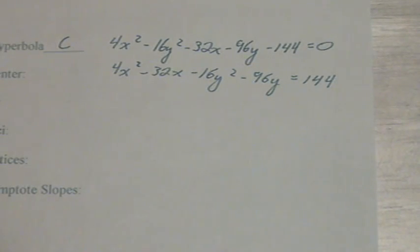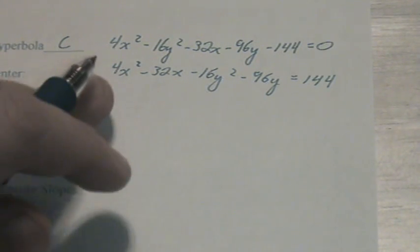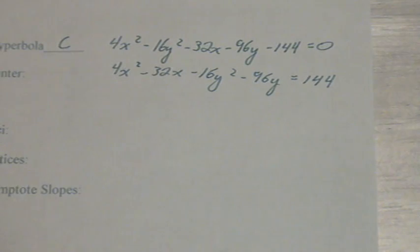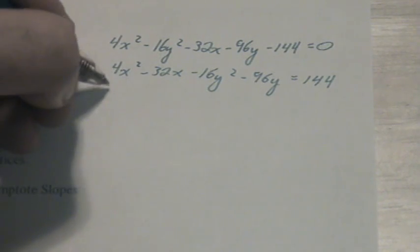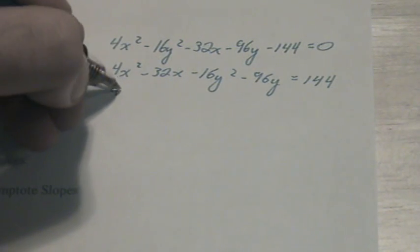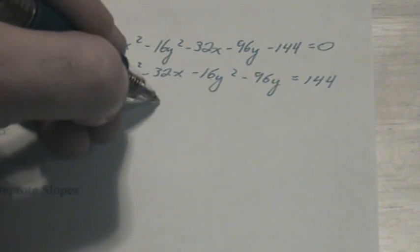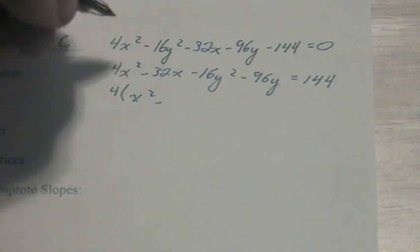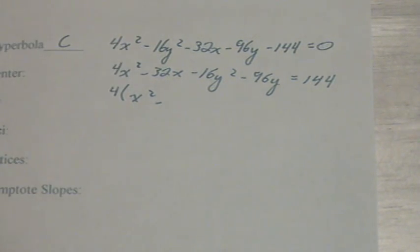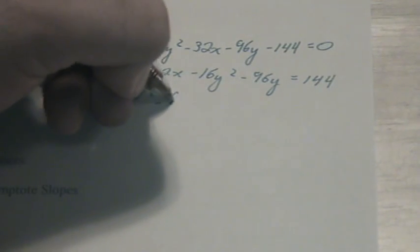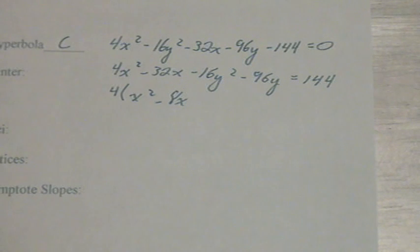Now, since we're going to be completing the square, we will need to get leading coefficients of 1 for both the x and for the y. We factor out the 4, giving us 4 times x squared minus 8x, since negative 32 divided by 4 is negative 8.